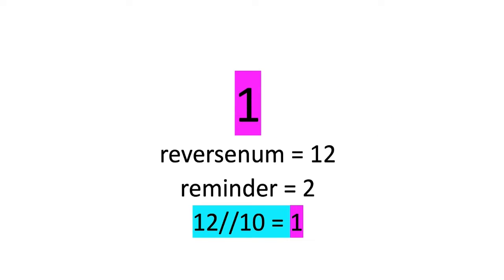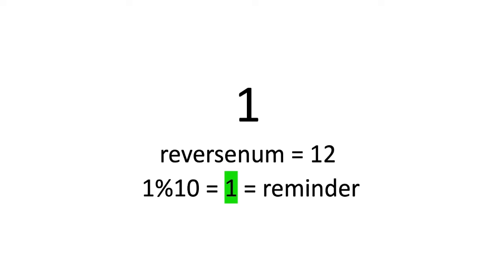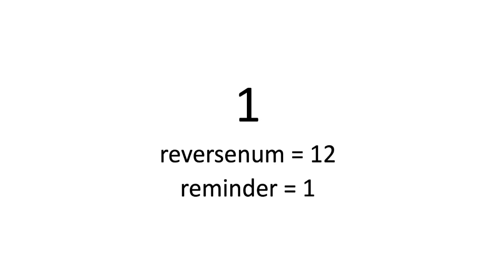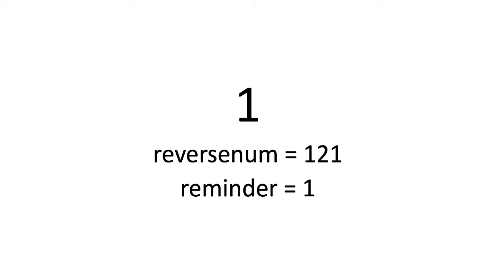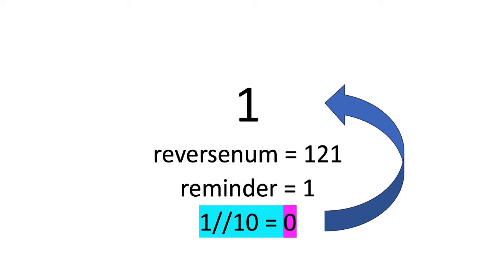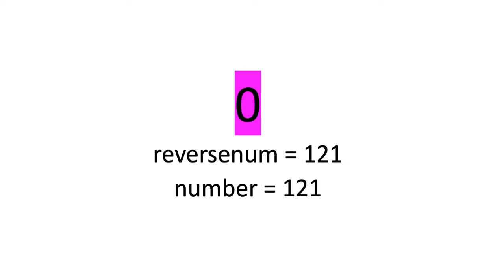Now our new number is 1 and reverse number is 12. We do 1 mod 10 which equals 1 as our remainder. Using the formula, reverse number becomes 121. Then 1 integer divided by 10 gives 0, so our number is now 0. Once we reach 0 we compare the reverse number with our original number. If both are the same we return true, else we return false. I hope the approach is clear.